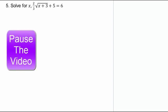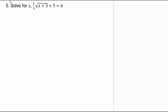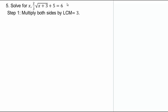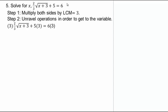Try this one on your own. When getting rid of the two-thirds coefficient, remember you multiply by three halves. You can choose to multiply everything by 3, which will simplify the equation. You can add or subtract the same number on both sides, multiply the whole equation by the same number on both sides, or divide by the same number on both sides. Let's multiply by 3 and then unravel.